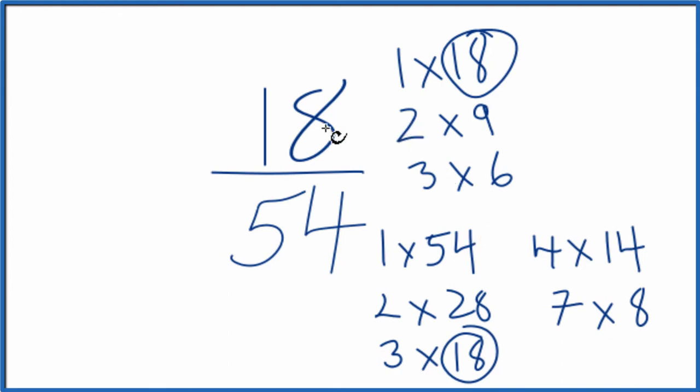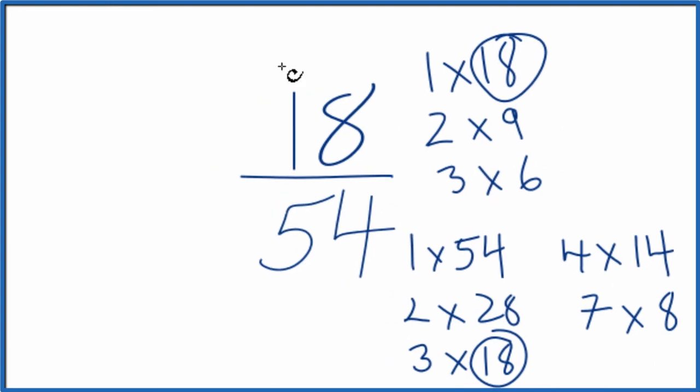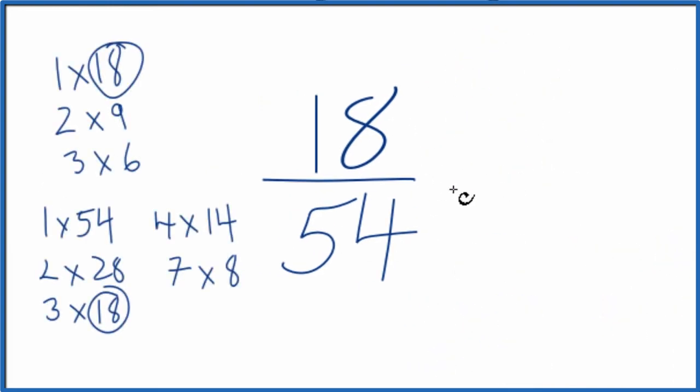So I can divide 18 by 18 and 54 by 18, and we'll have simplified or reduced 18/54. Let's move this over here. So 18 divided by 18 is just 1. 54 divided by 18 is 3. So we've simplified 18/54 down to 1/3, and we can't simplify this any further.